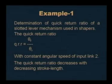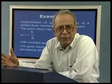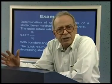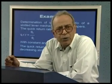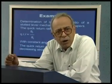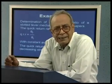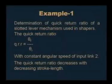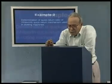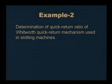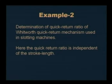The slotted lever quick return mechanism used for shaping machines is not good for smaller stroke lengths because then the quick return ratio tends to become one. For slotting machines where stroke lengths are normally short, we need a different type of quick return mechanism where the quick return ratio is independent of the stroke length. Such a mechanism is called the Whitworth quick return mechanism.